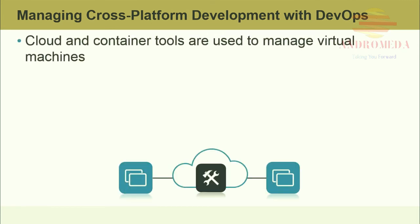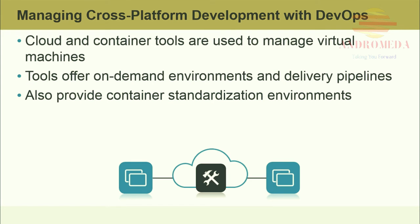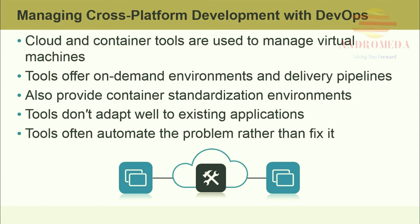Cloud and container tools are used to manage virtual machines. Docker is a container tool that wraps up your application and allows it to be moved and deployed anywhere. Tools offer on-demand environments and delivery pipelines — an application can be staged and continually piped and installed in a container to be deployed in the cloud. This system encapsulates applications with all of their dependencies and isolates them from the rest of the world, providing container standardization environments. Some of these tools don't adapt well to existing applications, and by encapsulating existing code and dependencies, container tools often automate the problem rather than fix it.